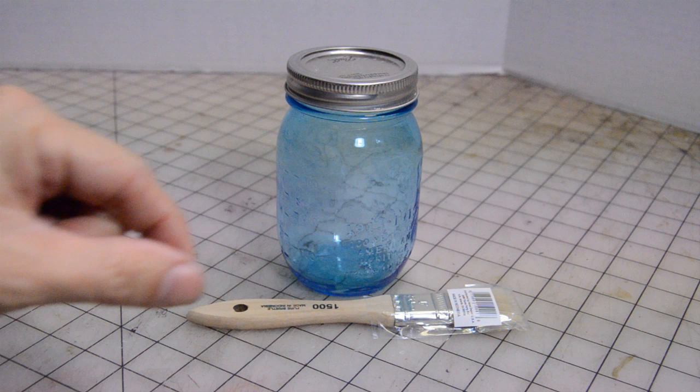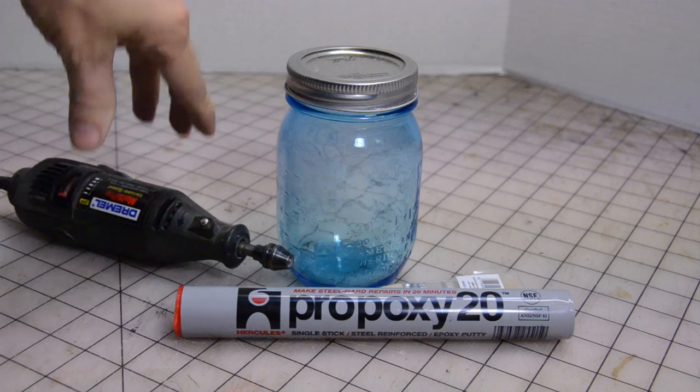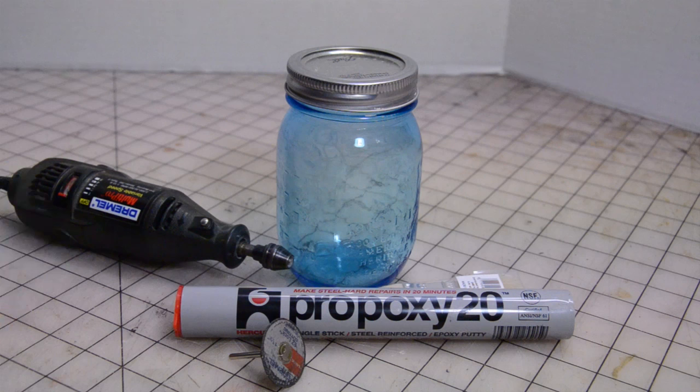You're going to need a mason jar, a chip brush, a tube of Propoxy 20, your Dremel, and a ceramic cutting wheel. Now we've got these tools. Let's get started.